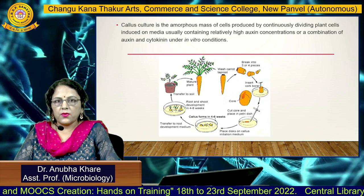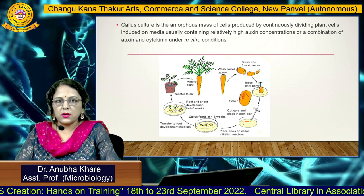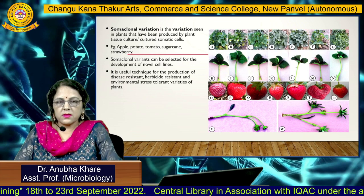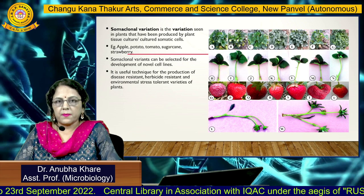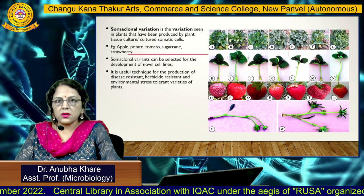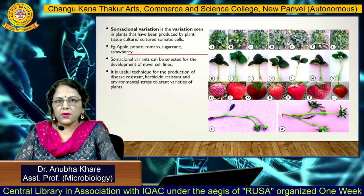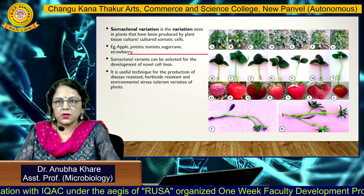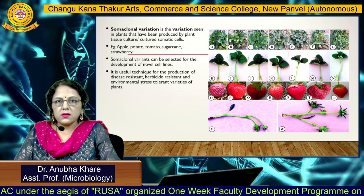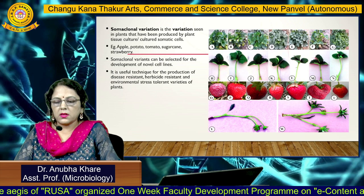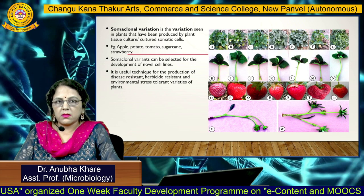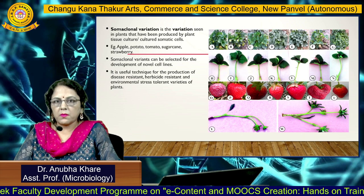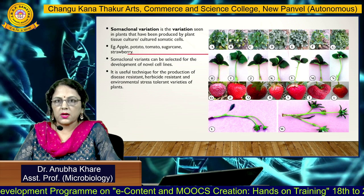Finally, the regenerated plant has to be transferred to field conditions for proper acclimatization to the environment. The next technique is somaclonal variation, which is variation in plants usually seen when there is continuous division of plant cells during somatic embryogenesis, or observed naturally in plants. It has been observed in apple, tomato, sugar cane, potato, and strawberry.